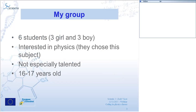My group for this project is five students — three girls and three boys. They are interested in physics and chose the subject, but they are not especially talented. They are regular students who like physics, not world champions in physics or ICT. They are regular kids in their 11th grade, between 16 and 17 years old.